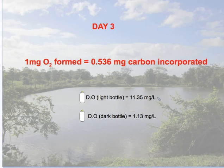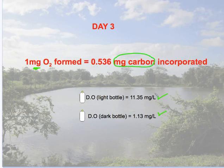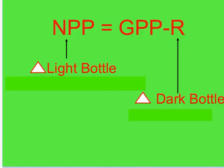Two days later, we came back to the same area and measured our bottles for the level of dissolved oxygen. Given our original definition — which asks for biomass — we would have to convert milligrams of oxygen into milligrams of actual carbon fixed by these autotrophic organisms, the algae in our pond. Your job is to calculate the NPP and apply the relevant equations.